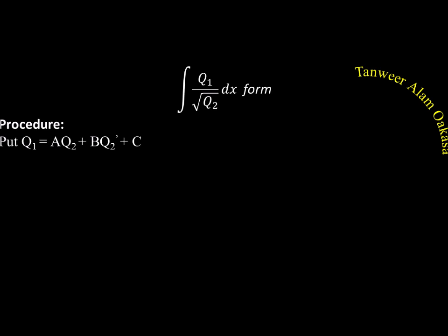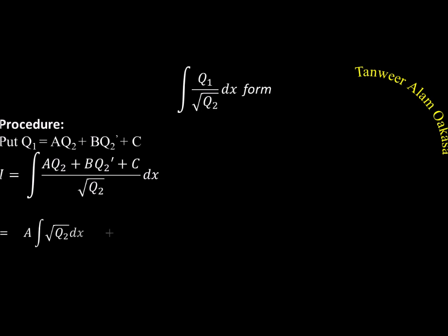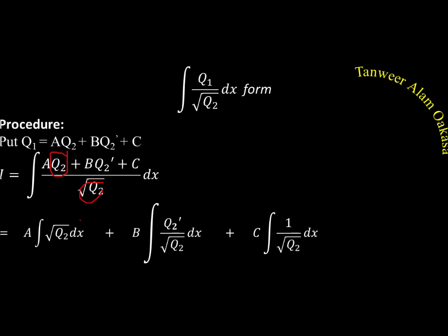With Q1 expressed as A·Q2 + B·Q2' + C, the integration splits into three parts in the numerator over √Q2: we get A·Q2/√Q2, then B·Q2'/√Q2, and then C/√Q2.